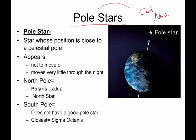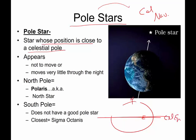A pole star is a star whose position is very close to a celestial pole. As you may recall, if this is the Earth's equator, if that is extended out into space, that's called the celestial equator. If this is the Earth's north pole and south pole, that gets extended out into space to the north celestial pole and the south celestial pole.